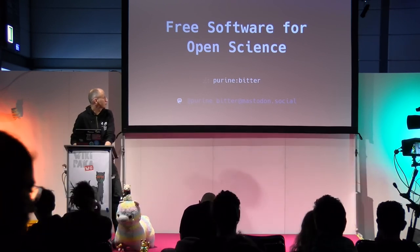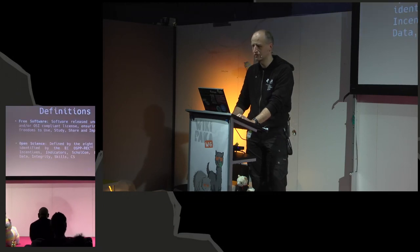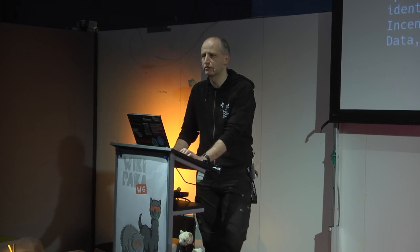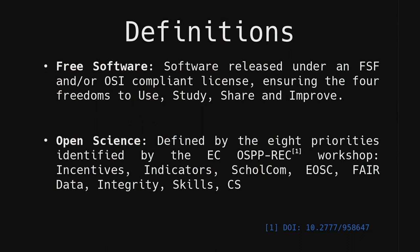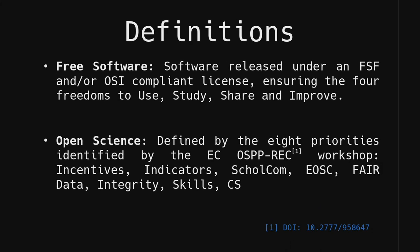The topic today is free software for open science. As I'm associated with the Free Software Foundation Europe, we should probably start with a definition. What do we consider to be free software? It's pretty much every software released under either an FSF or OSI compliant license — what most people also know as open source. The main point is that the FSF and OSI definitions standardize the same things, just expressed differently. It should guarantee the full freedoms to the user: to use, to study, to improve, and to share the software. This requires the openness of source code and the ability to create derivatives.